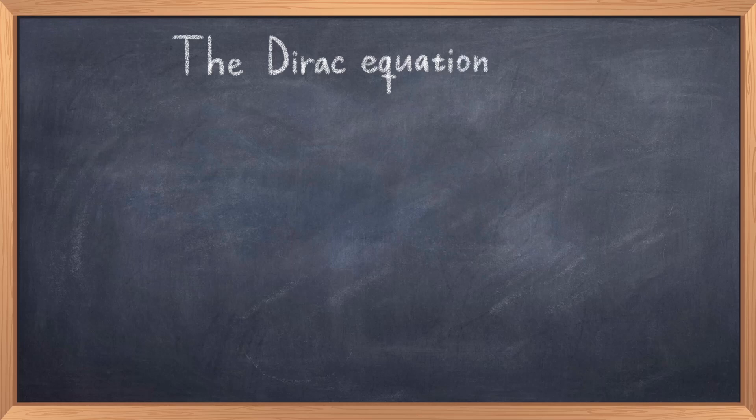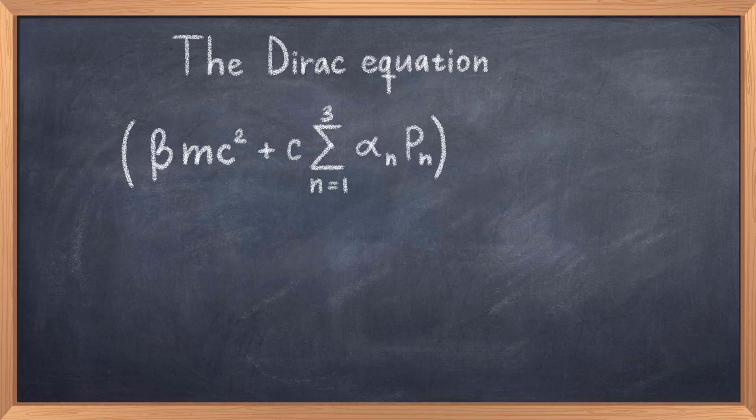In parenthesis, beta mc squared plus c and the sum from 1 to 3 of alpha n p n in a parenthesis, psi is equal to i h-bar and the derivative of psi with respect to time. Firstly, this equation resembles the Schrödinger equation a bit and also the Klein-Gordon equation. In fact, in this form it may look a bit like the crossbreed of the Schrödinger equation and the square root of the Klein-Gordon equation, which it basically is.